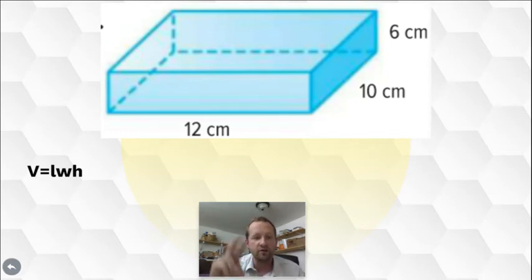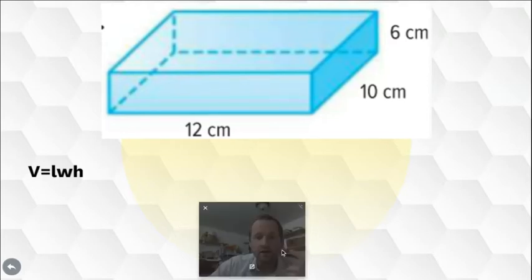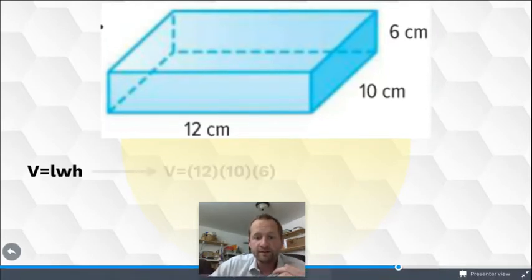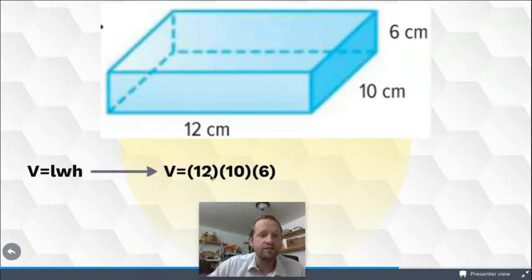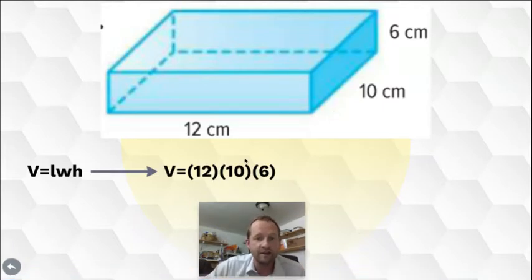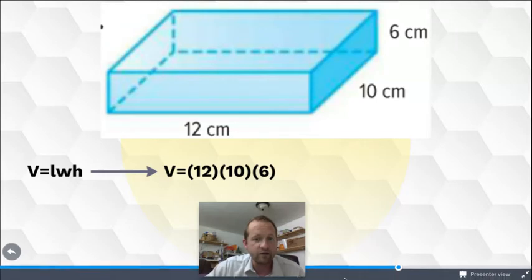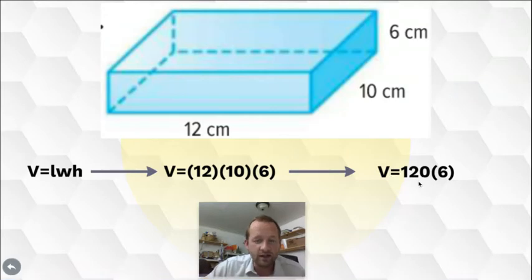So, I'm going to replace the L, the W, and the H with their respective lengths. So, to move on to my next spot, volume equals 12 times 10 times 6. 12 times 10 is 120. So, volume equals 120 times 6.